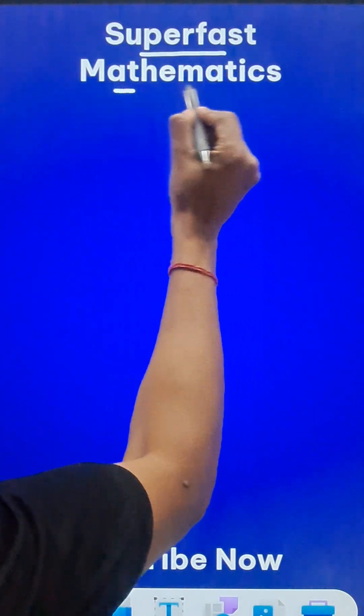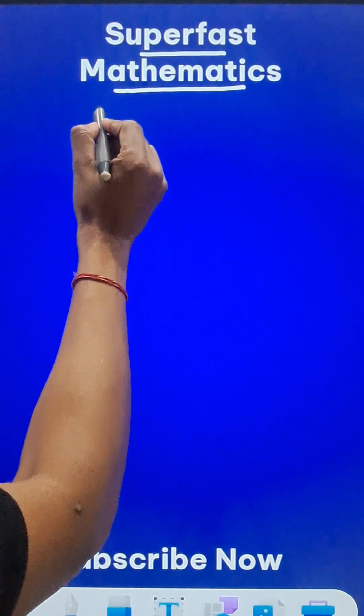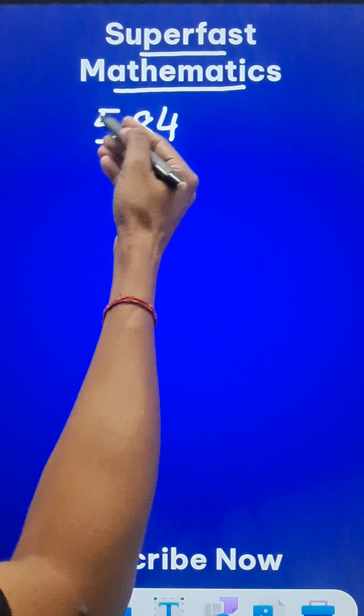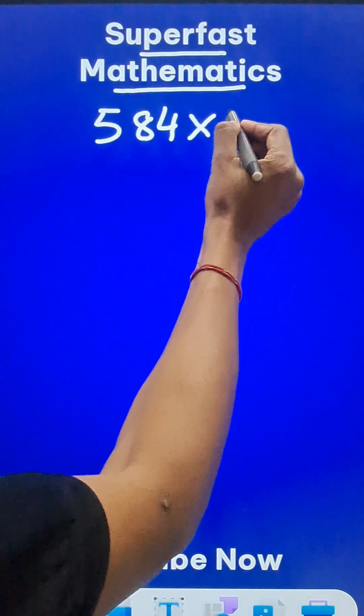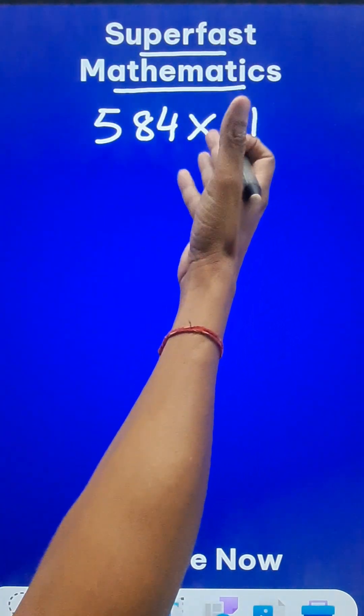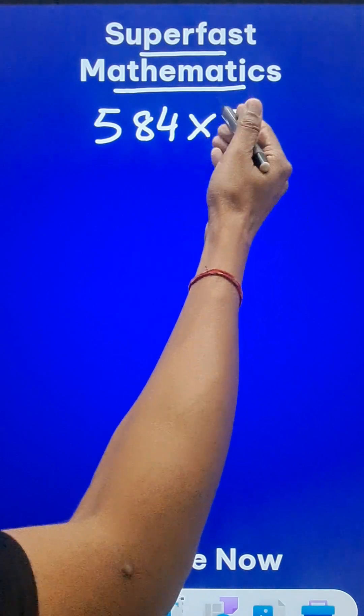Here is a super fast multiplication shortcut trick. Any number like 584, or you can take even a bigger number, multiplied by any number in the 30s. I am taking 31 here, 32, 33—it can be any number, 30 up to 39.